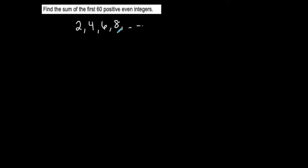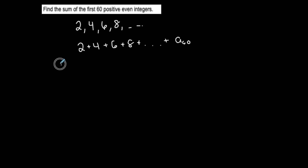Find the sum of the first 60 positive even integers. The first positive even integer is 2, then 4, 6, 8 — these are positive, even, and integers. This is the sequence I'm referring to. I want the sum stopping at the 60th term, which I call a60. I'm not going to write out 60 terms; instead I'll find the nth term. The first term a1 is 2, and the common difference is 2, so it's arithmetic.